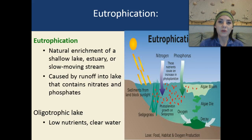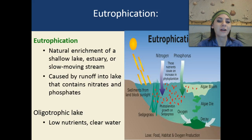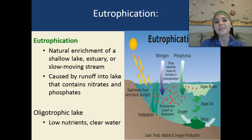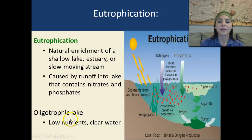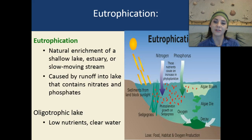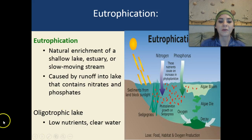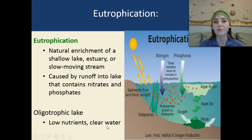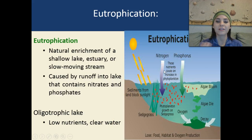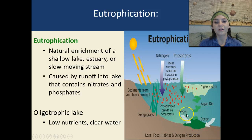Eutrophication is a natural process, but we can also have human-caused eutrophication. Naturally, eutrophication is a natural enrichment of a shallow lake, estuary, or slow-moving stream, caused by runoff that contains nitrates and phosphates — this is natural runoff, not from farming industries. Then we have oligotrophic lakes, which have very low amounts of nutrients and very clear water. The more nutrients present, the more turbid the water will be, with large algal blooms. An input of nitrogen and phosphorus triggers an algal bloom, the algae dies and decays, which lowers the oxygen content.